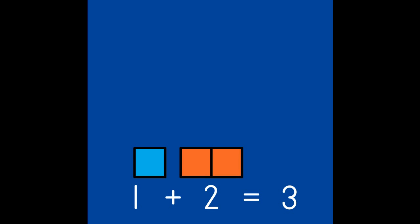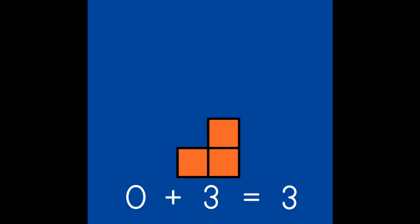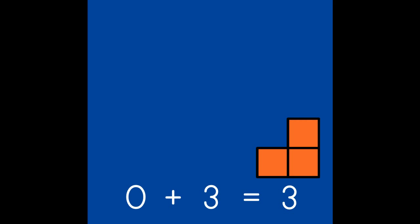The first partner is 1. What does 1 need to make 3? 2. 1 and 2 are partners of 3. You can do this tricky one. What does 0 need to make 3? 3. 0 and 3 are the same as 3.